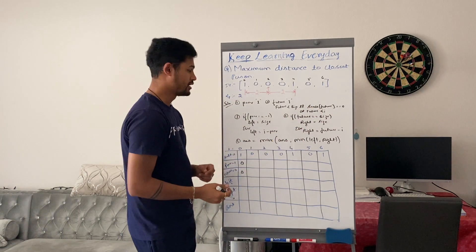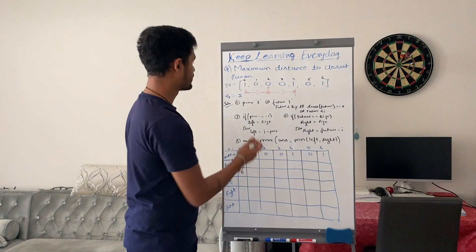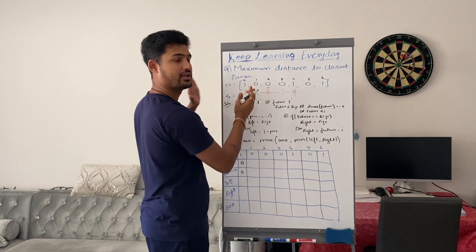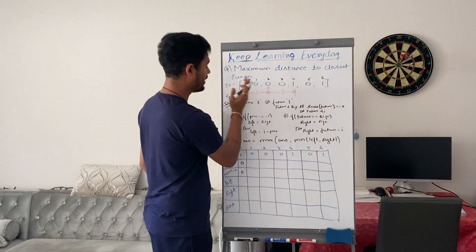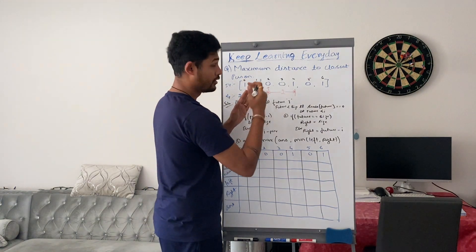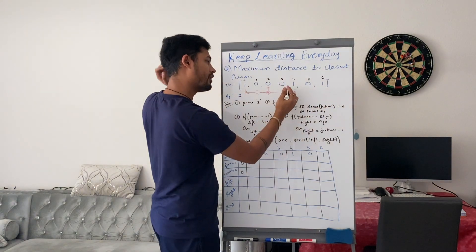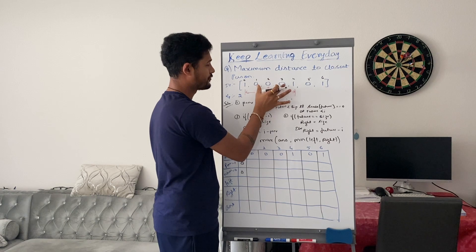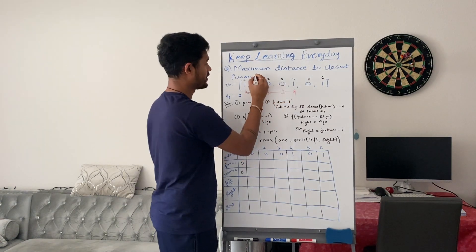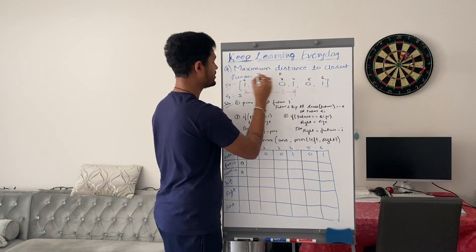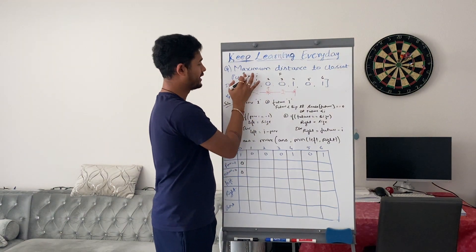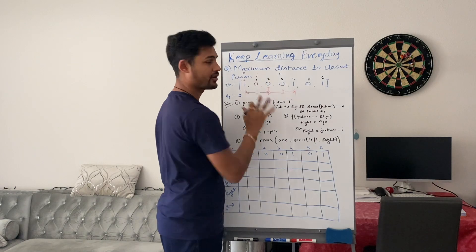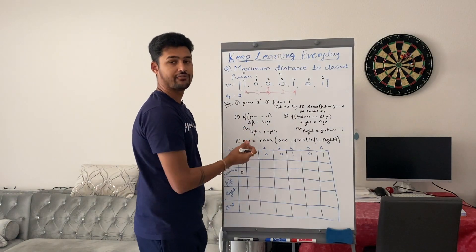Left and right are the distances. Let's imagine we are at index 1. How do we find the distance to the previous one? It will be i minus previous. For the right distance, let's say our future is somewhere at 3, so the distance is future minus i. This is i, this is future, and this is previous. So the left would be i minus previous and right would be future minus i. We are going to use this formula to figure out left and right values.